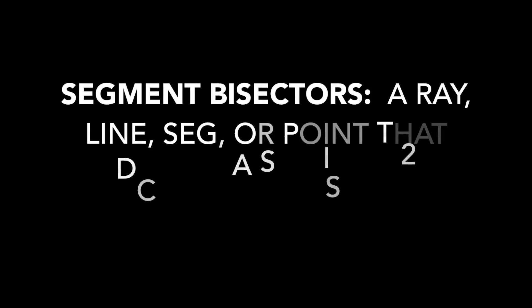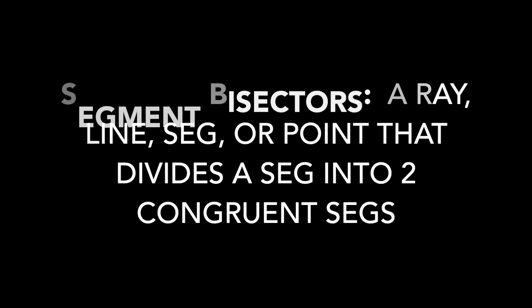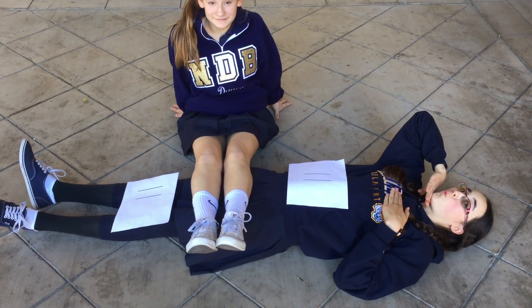A segment bisector is a ray, line, segment, or point that divides a segment into two congruent segments. Here is just an ordinary segment. After it's been bisected, it's now divided into two congruent segments.